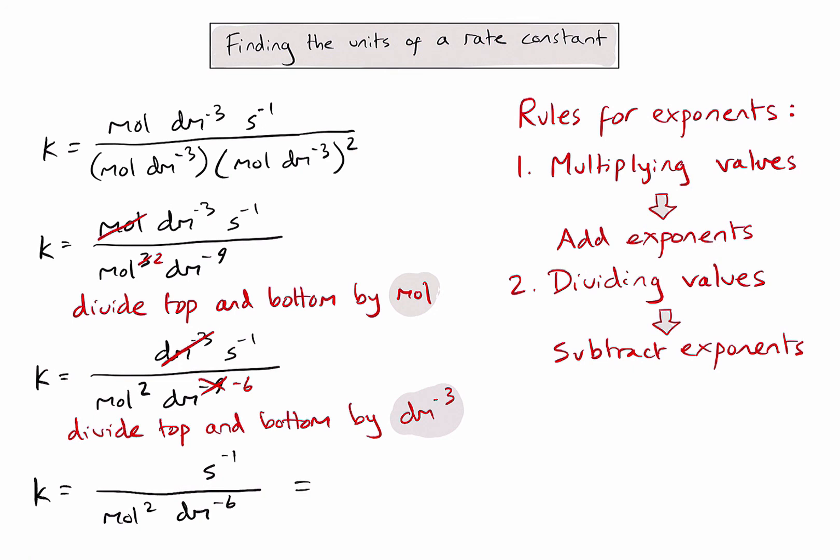So moving moles to the power of two up to the top will make it moles to the power of minus two. Decimetres to the power of minus six on the bottom will become decimetres to the power of six on top. And the seconds to the minus one is already on the top, so I can leave that as it is. And there we have the simplified units for the rate constant for this reaction.